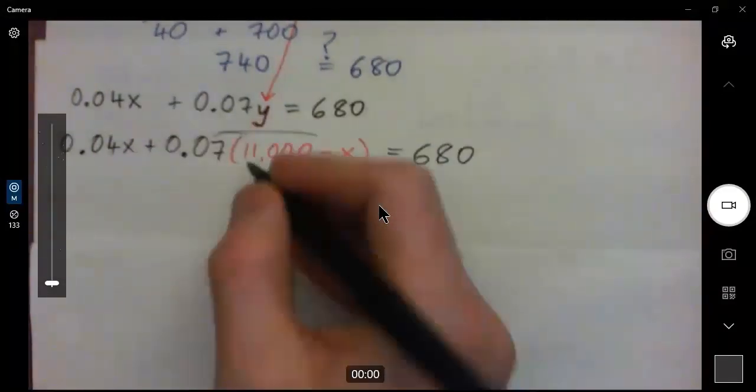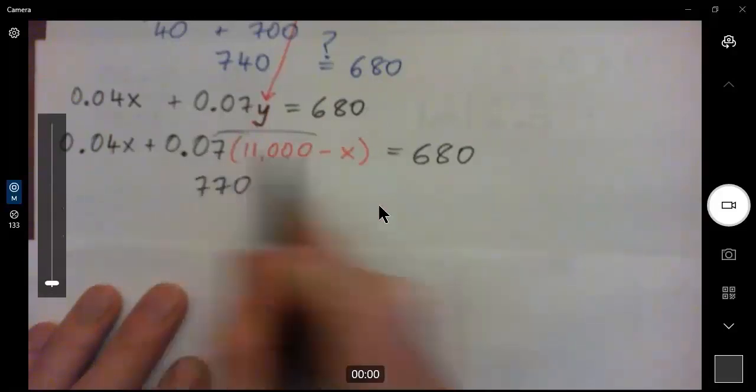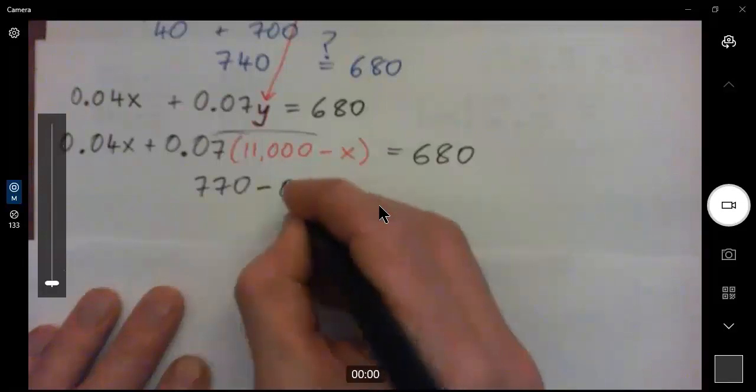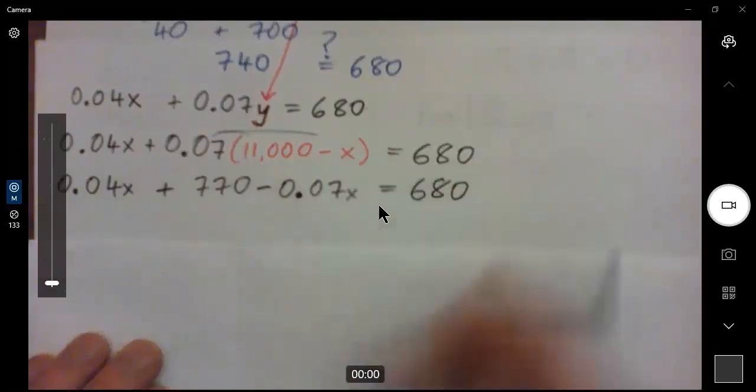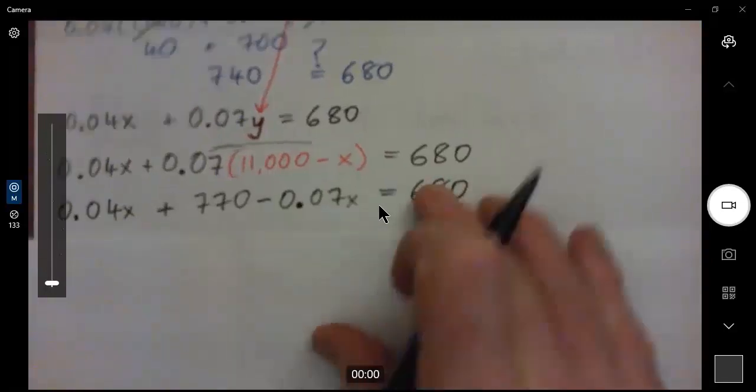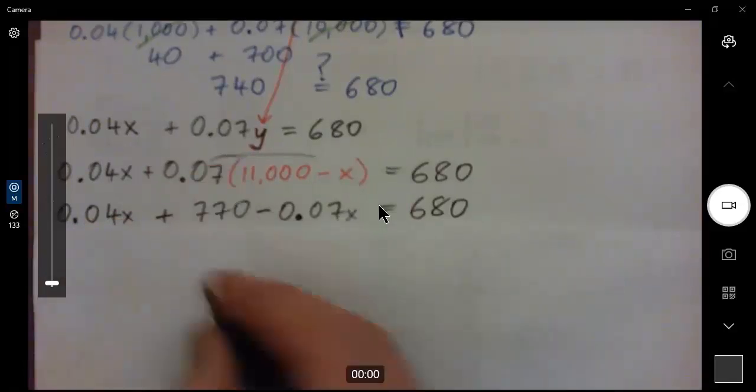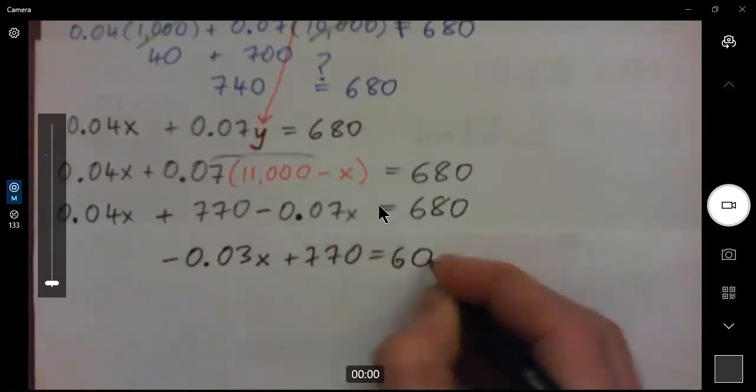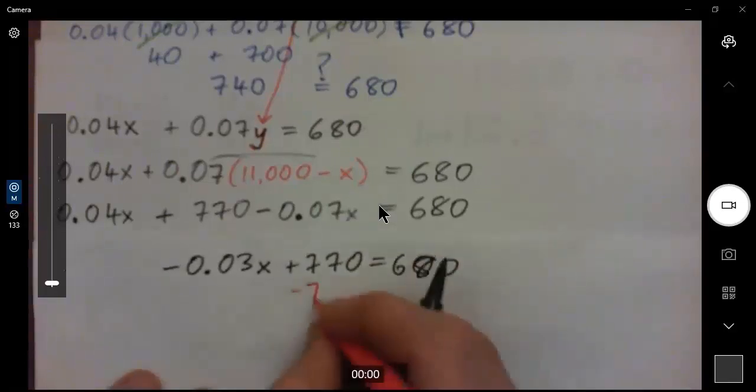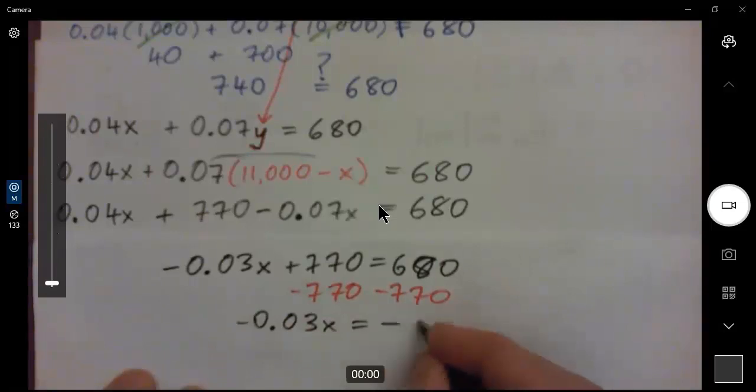When you multiply 0.07 in here, that's 7% of $11,000, which is $770, and this times this gives negative 0.07X. You have to bring down the 0.04X. That does not disappear. So, that goes there, and that equals 680. And now we're just going to solve like a regular equation. We can add like terms. 0.04 minus 0.07 negative 0.03X plus 770 equals 680, and then subtract 770 from both sides.